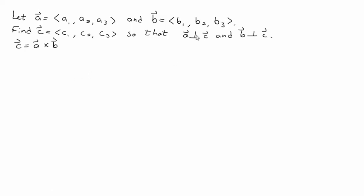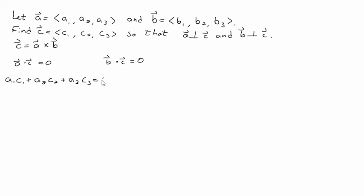What do we know about vectors that are perpendicular? If the vectors are perpendicular, then we need their dot product to equal zero. So we need A dot C to be zero and we need vector B dot with vector C to be zero. The dot product of A and C is A1·C1 + A2·C2 + A3·C3 = 0. And B dot C gives us B1·C1 + B2·C2 + B3·C3 = 0. We need both of these equations to be true because we need C to be perpendicular to both of our vectors.